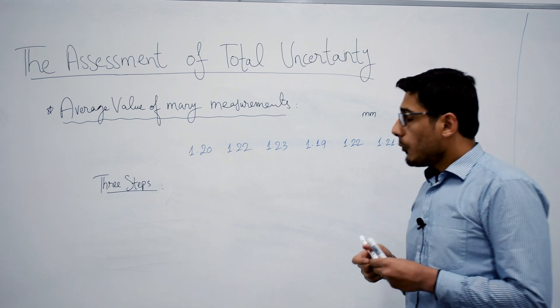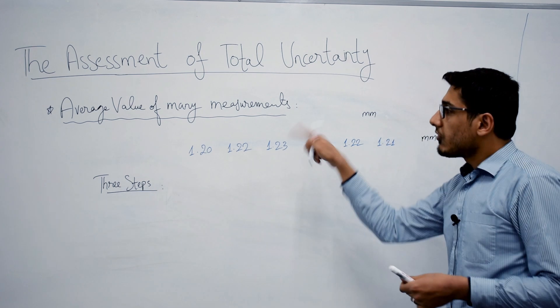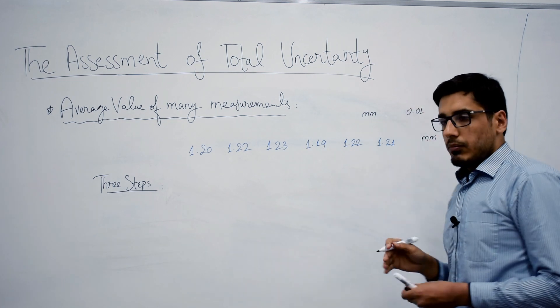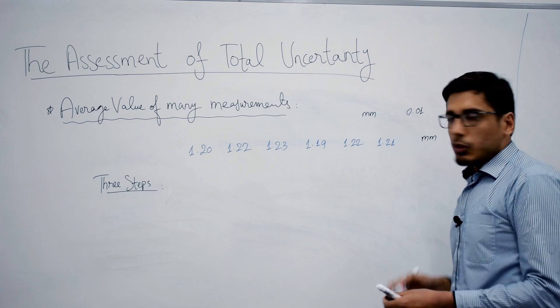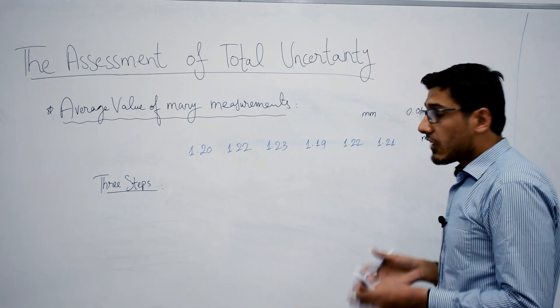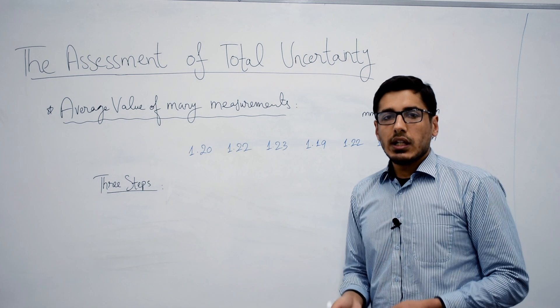Now you might say that the uncertainty in the final result can be equal to the least count or absolute uncertainty of your device, which in this case is screw gauge. But that's not the case - you have to go through a procedure to calculate the uncertainty.